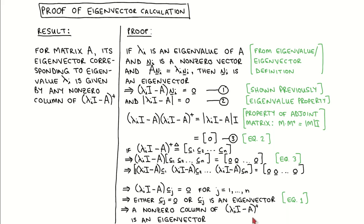This result allows us to easily calculate the eigenvectors of a matrix A by hand, which in turn allows us to convert the state variable model to the modal canonical form.